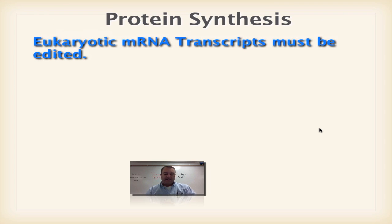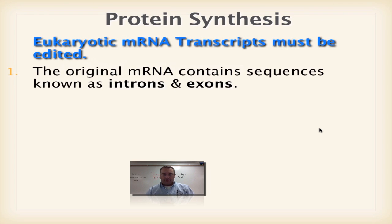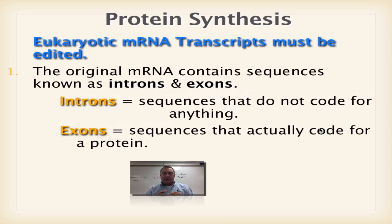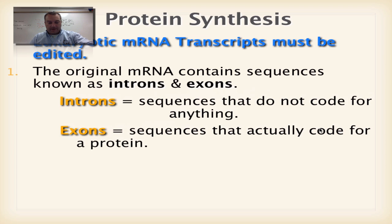Eukaryote mRNA transcripts have to be edited. It has to be done because eukaryotic DNA is different than prokaryotic DNA. It has things called introns and exons. Introns do not code for anything. What we want to think about here is that the word intron means interrupt. In other words, we are interrupting the coding sequence. We can't really transcribe it. We got to cut this stuff out.